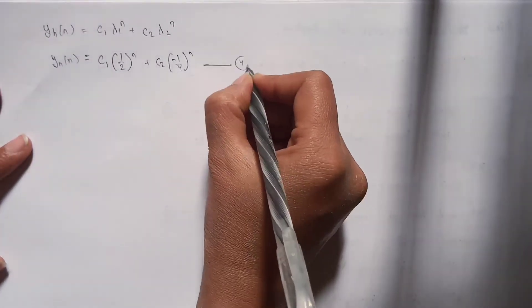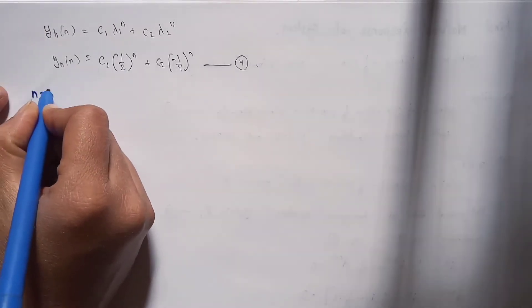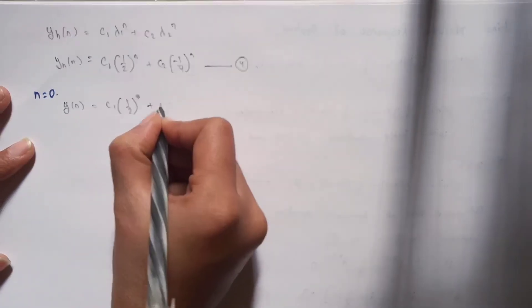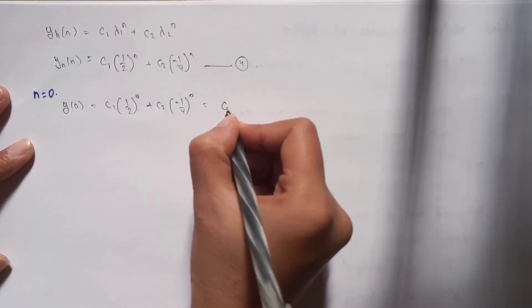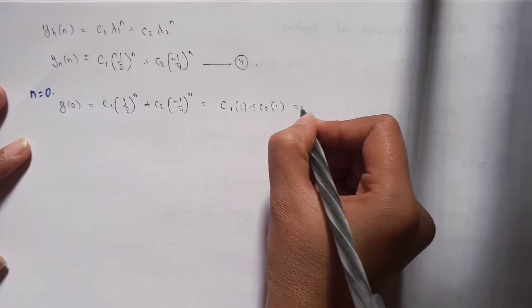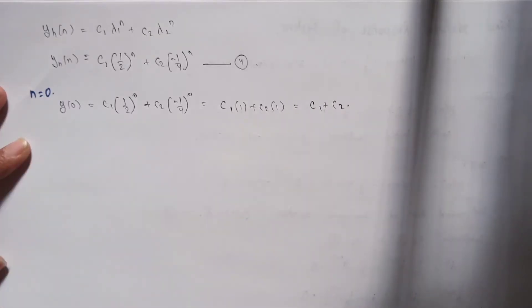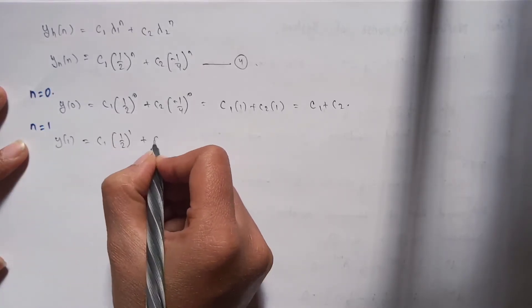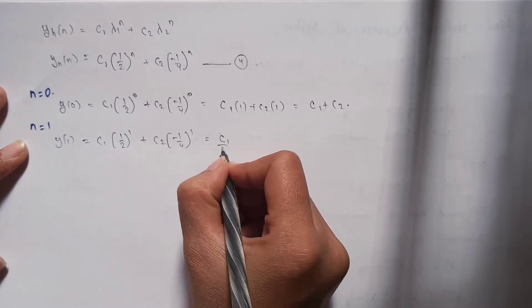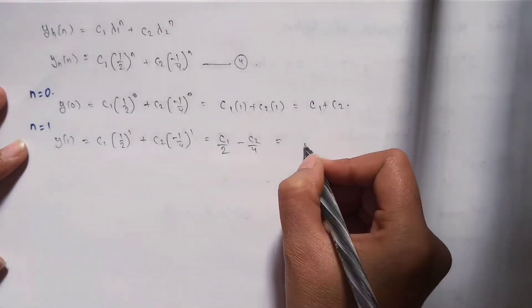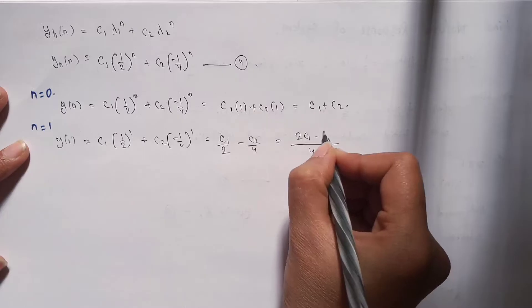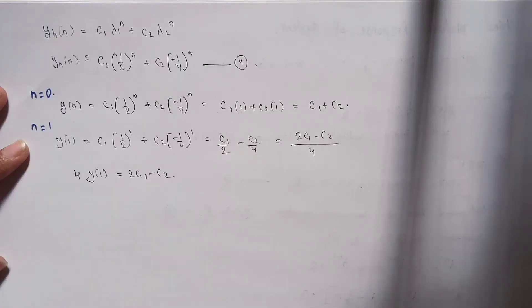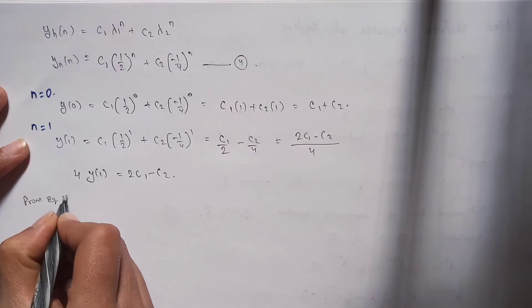Now we substitute n = 0 into equation 4: y(0) = C1·(1/2)^0 + C2·(−1/4)^0 = C1 + C2, since anything to the power zero is 1. Substituting n = 1: y(1) = C1·(1/2) + C2·(−1/4) = C1/2 − C2/4. Multiplying through by 4 gives 4y(1) = 2C1 − C2. Let's call these equation 5 and equation 6.